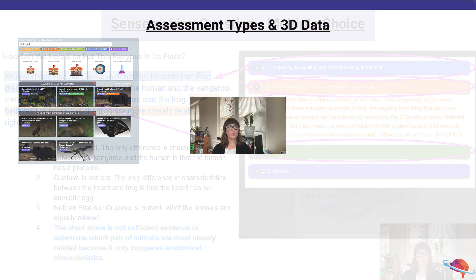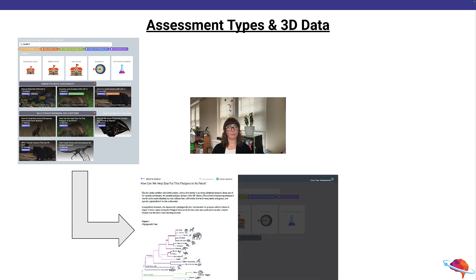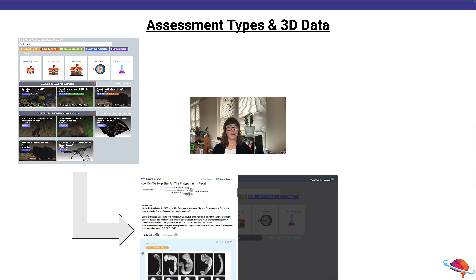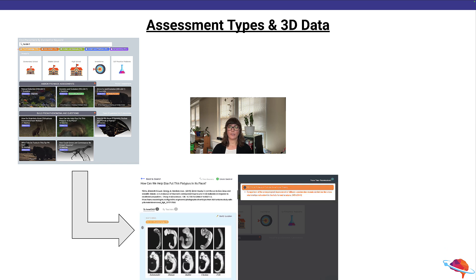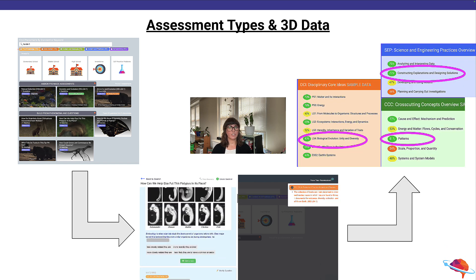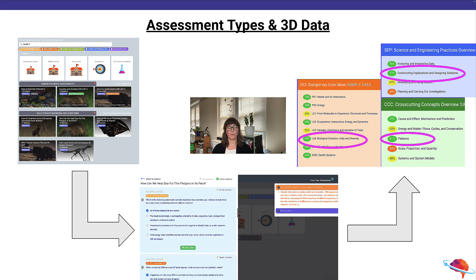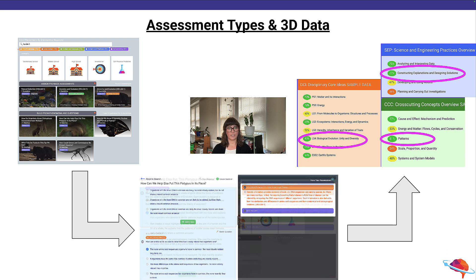On InnerOrbit, you can find multiple phenomena for every NGSS performance expectation, and you can use the three question types we just discussed to build any type of assessment you want for your classroom. After you've assessed your students, you will have access to detailed three-dimensional data so that you know where your students are excelling and where they might be struggling.